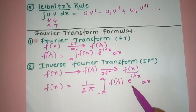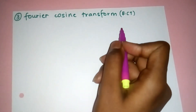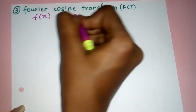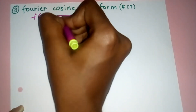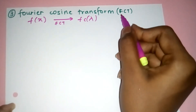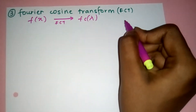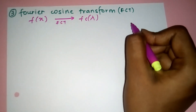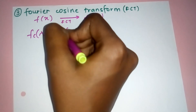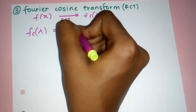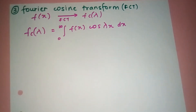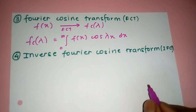Next is the Fourier Cosine Transform (FCT). Here we convert f(x) into F_c(λ). In questions, they may ask you to convert an equation into FCT or IFCT. The formula for F_c(λ) is: F_c(λ) = integral from 0 to infinity of f(x) cos(λx) dx.